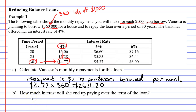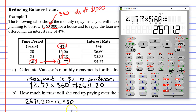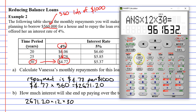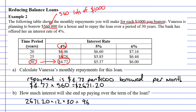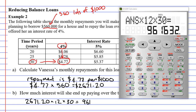Question B asks: how much interest will she end up paying over the term of the loan? We know she's paying $2,671.20 per month. There are 12 months in a year, and the loan runs for 30 years, so we multiply $2,671.20 by 12 and by 30, giving us $961,632.